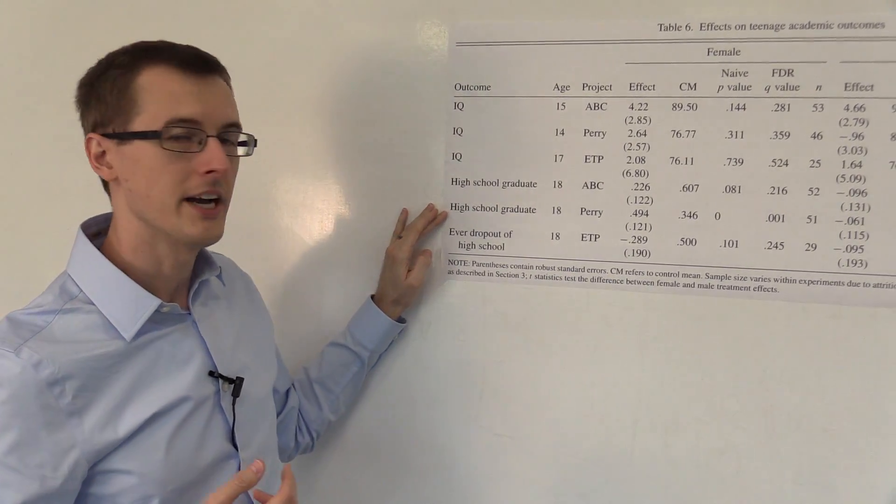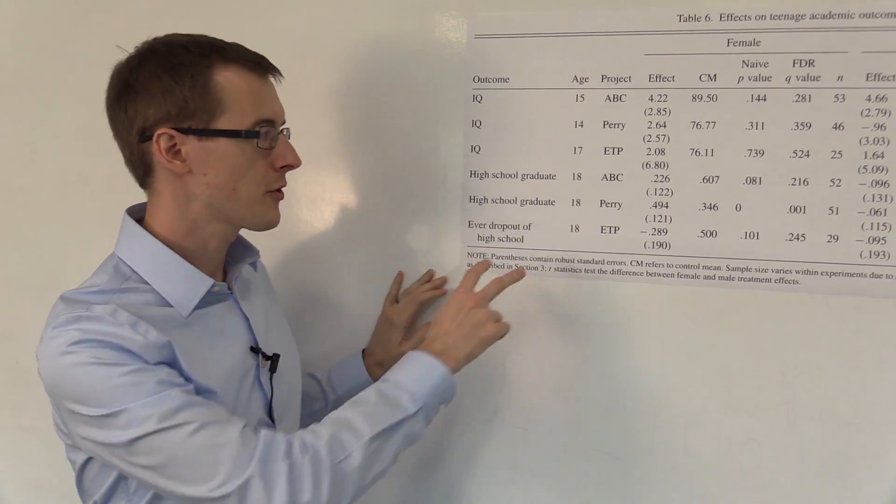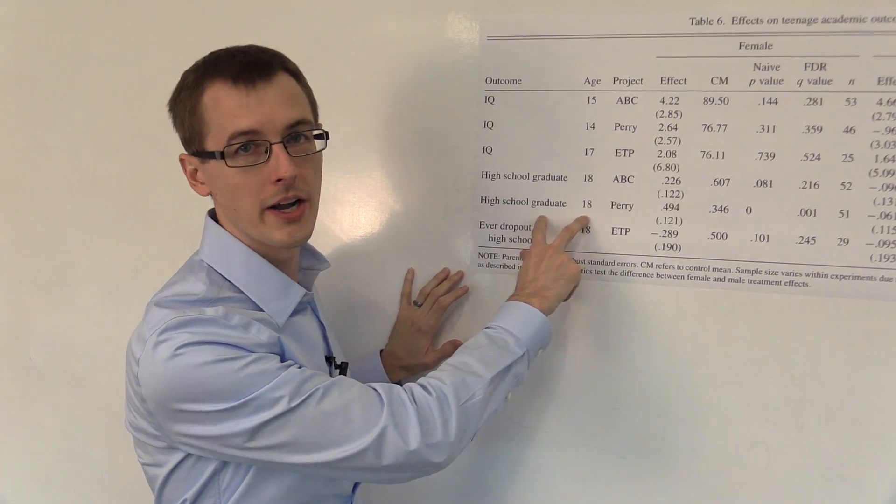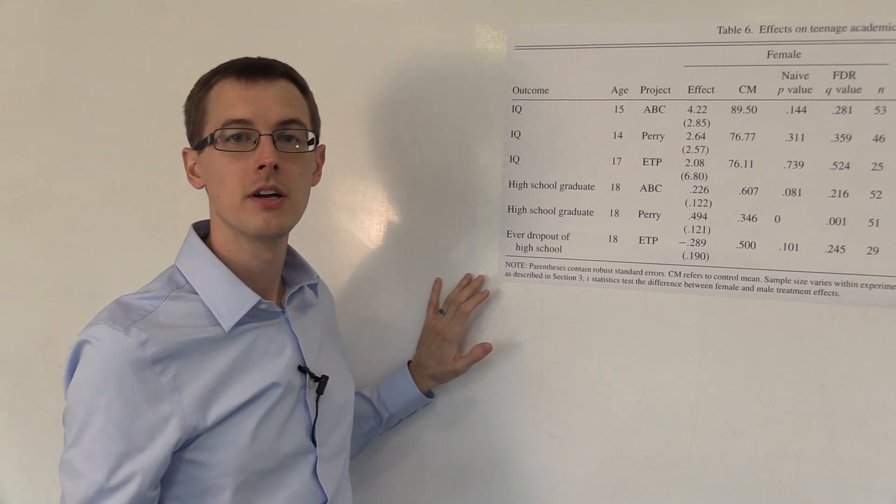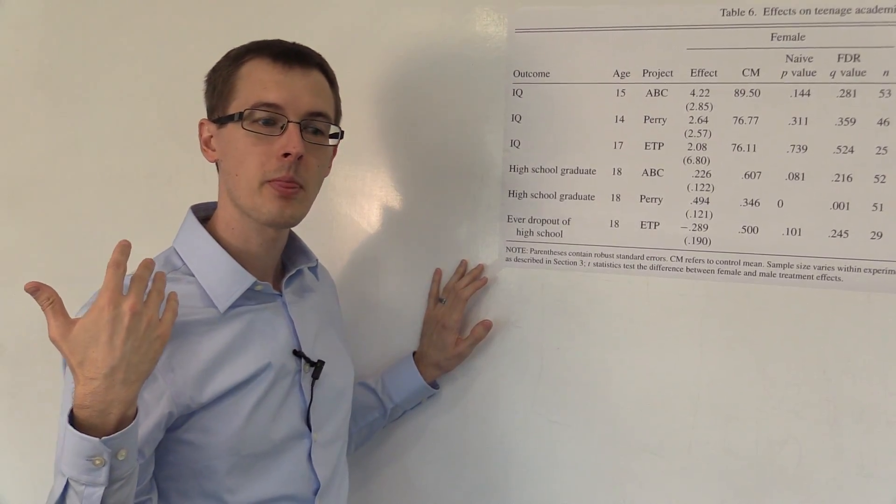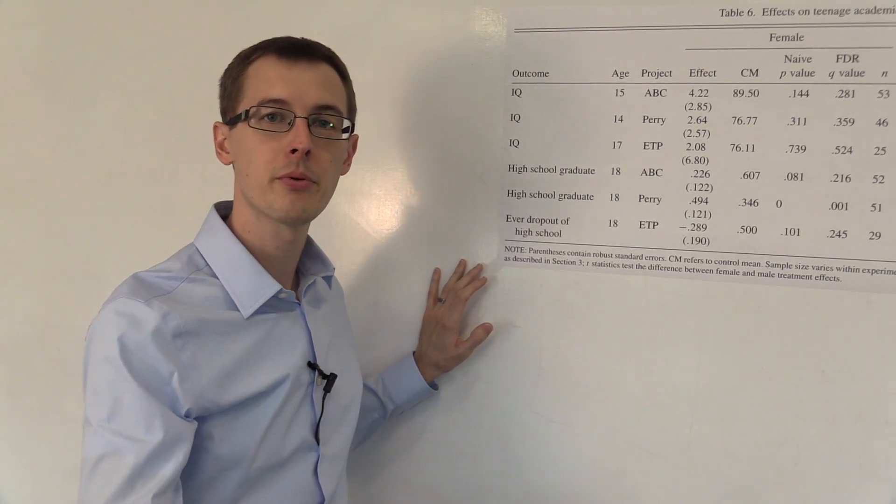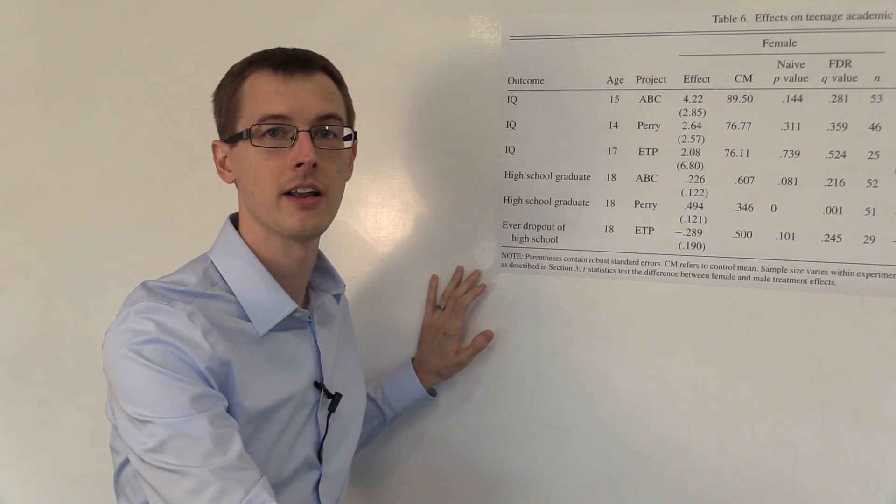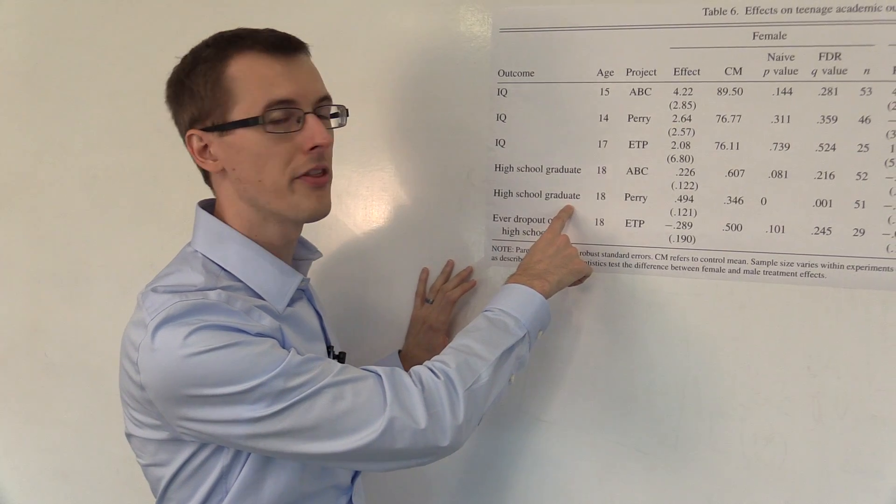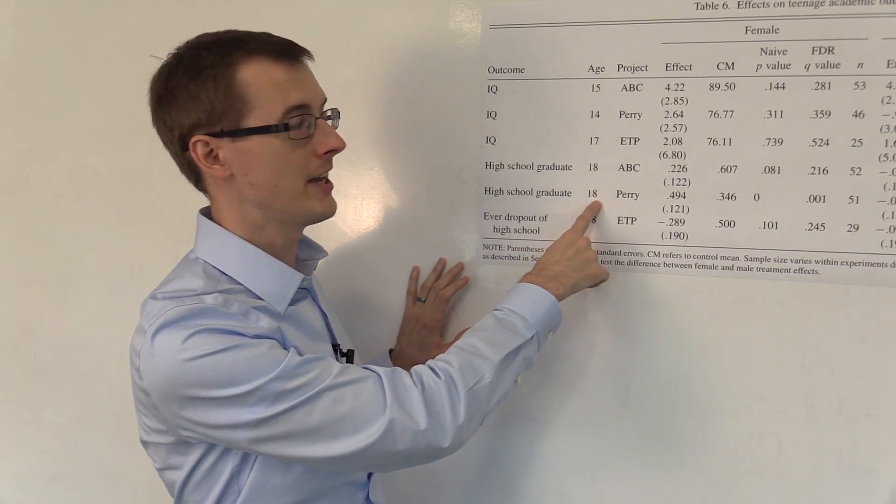He also looked at two different outcomes, IQ and high school graduate. I'm going to focus on this one line, high school graduate, which is very similar to the previous table we looked at, of the effect of going to preschool on how much education you got later in life. Here it's whether you graduated from high school by age 18.